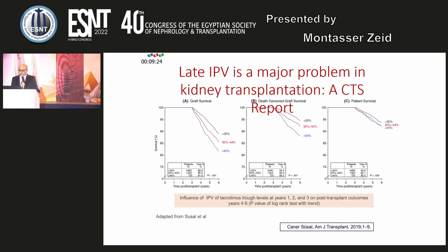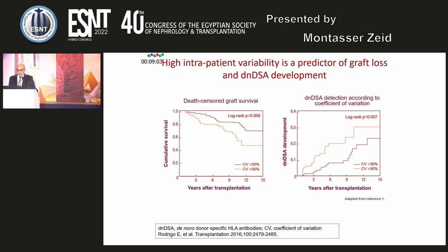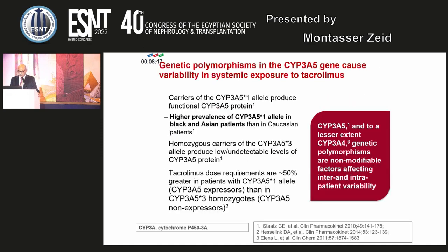Late intrapatient variability is a major problem in kidney transplantation. The influence of tacrolimus levels at years 1, 2, and 3 on post-transplant outcome will affect years 4 to 6 as regards graft survival, death-censored graft survival, and patient survival. High intrapatient variability is a predictor of graft loss and de novo DSA development, as demonstrated by data showing death-censored graft survival and de novo DSA detection according to coefficient of variation years after transplantation.